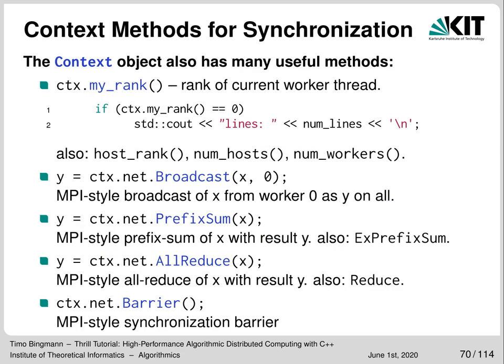Besides the DIA operations interface, there are many useful methods in the context class. myRank returns the rank of the worker, most often used to print some result only once. There are also methods similar to MPI's collective operations — you can broadcast, prefix-sum and all-reduce items. Different from MPI, these methods use Thrill's serialization, which means they automatically work on many different types. There is also a barrier synchronization method in case you need it for timing.